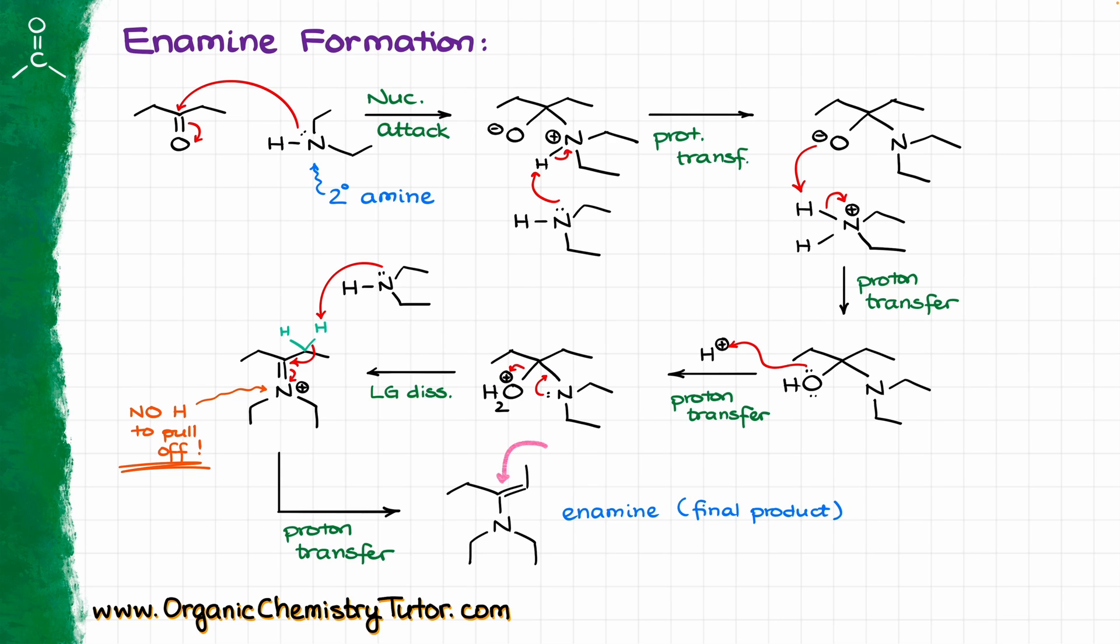So we are going to have our double bond next to our nitrogen and not on the nitrogen itself. So mechanistically speaking, both mechanisms are exactly the same, with the exception of the last step, which is going to be a little bit different. In the case of the imine formation, the last step was pulling off the proton from the nitrogen. In the case of the enamine formation, the last step is pulling off the hydrogen from the nearby carbon rather than nitrogen.